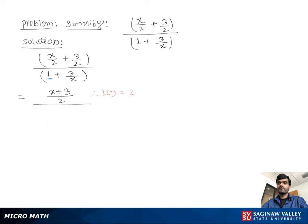For the denominator, instead of 1 we write x over x to make it easier, plus 3 over x. Taking the LCD of x, we get x plus 3 over x.